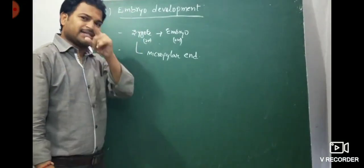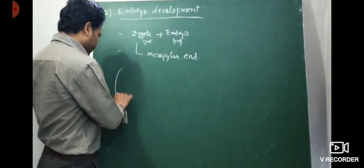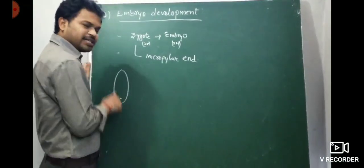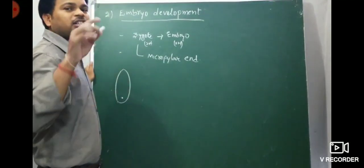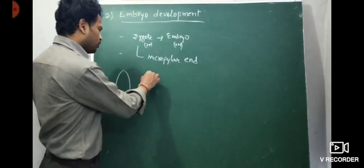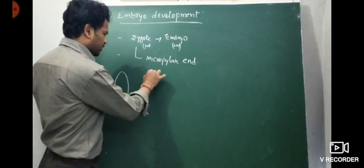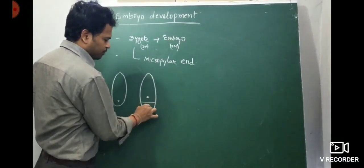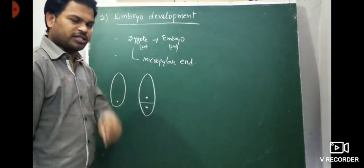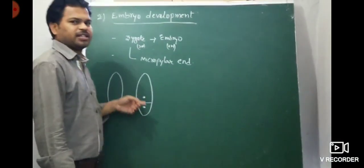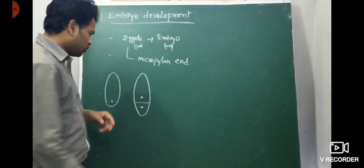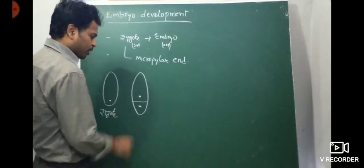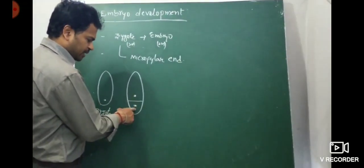The single cell zygote undergoes transverse division and produces two unequal cells — one is a terminal cell and another is a basal cell. This two-celled stage of the embryo is called a pro-embryo.